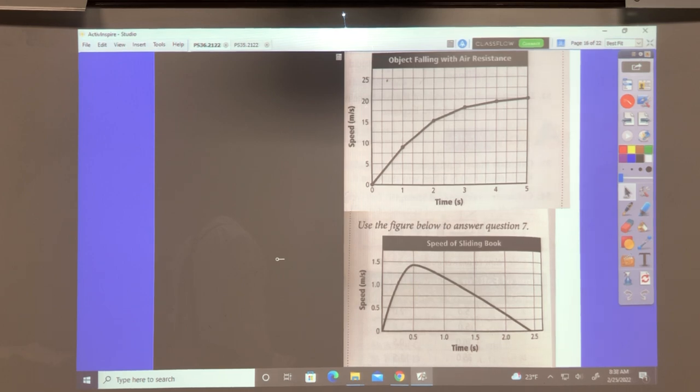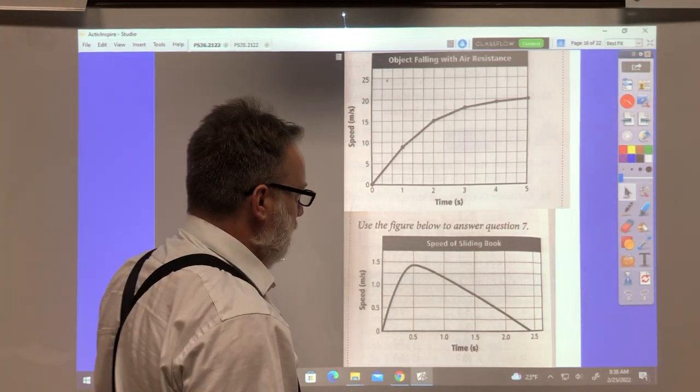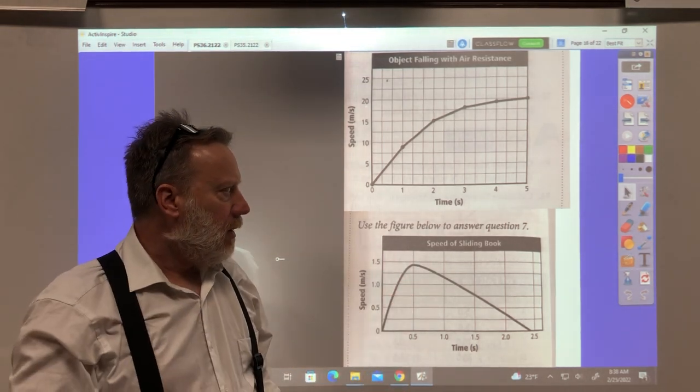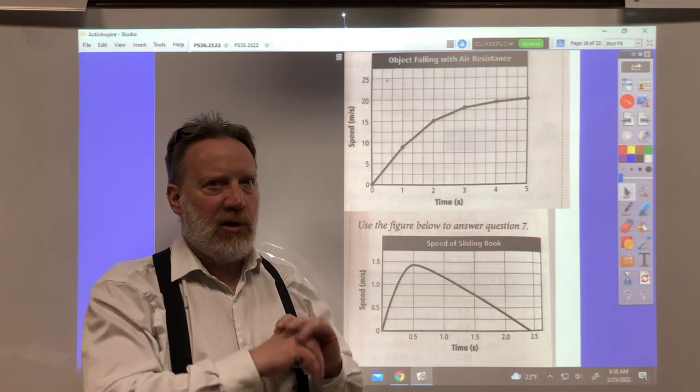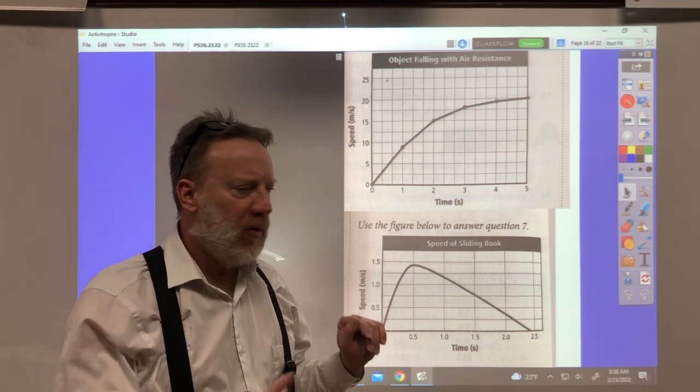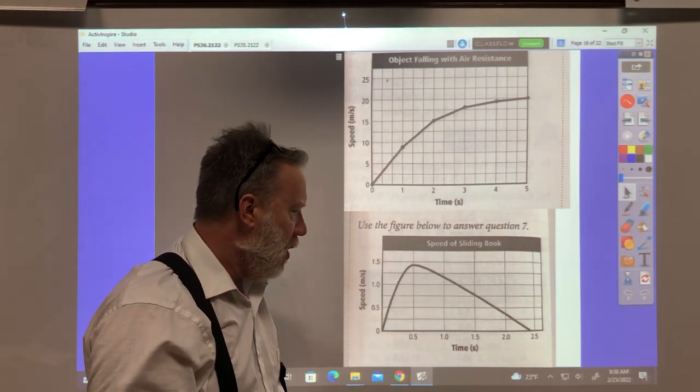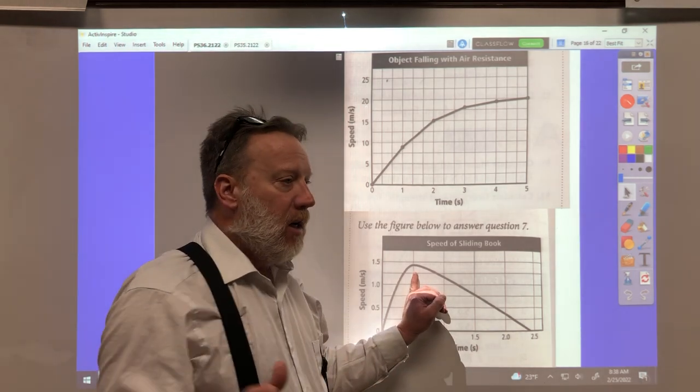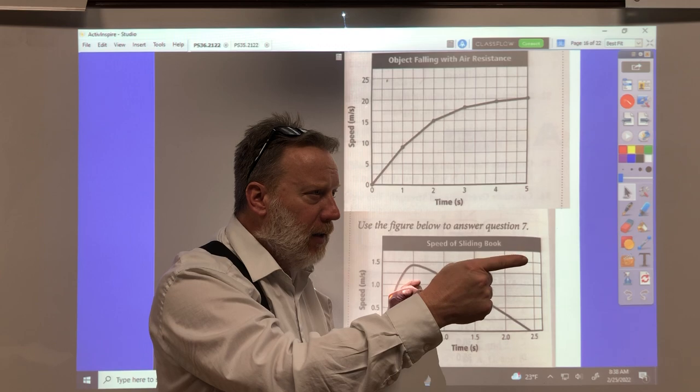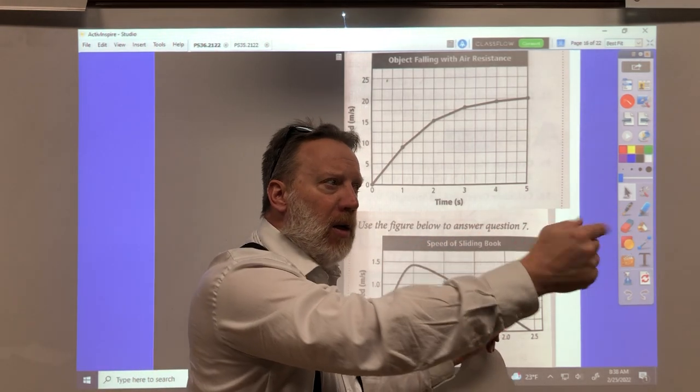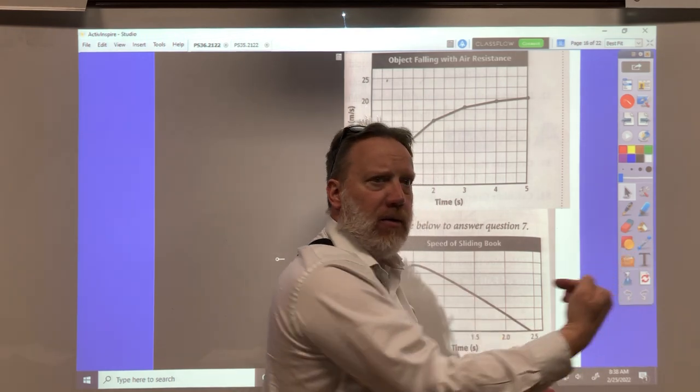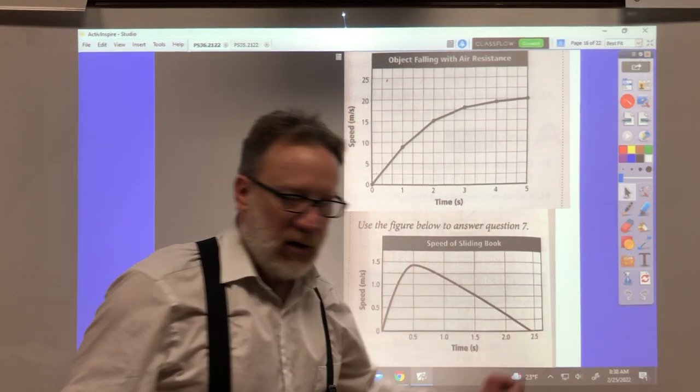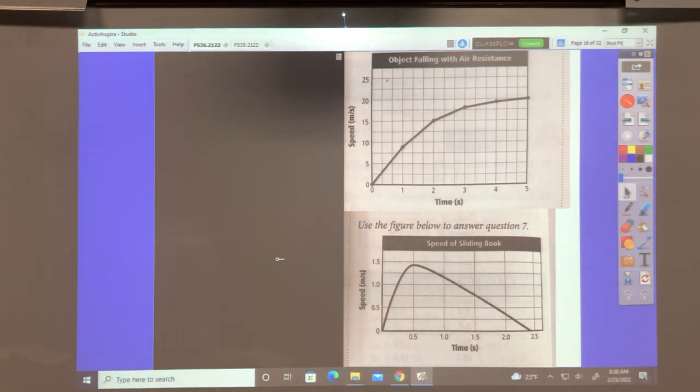Over what time interval is the net force opposite the book's motion? What's most likely is the book is starting at zero meters per second. You're speeding it up by pushing it. And it's going that way. Velocity that way. And as soon as you're done pushing it, it keeps going that way. But its acceleration is slowing it down. So the net force is opposite the book's motion, I would say, from 0.5 to 2.5, which is 2.4, which is option B.